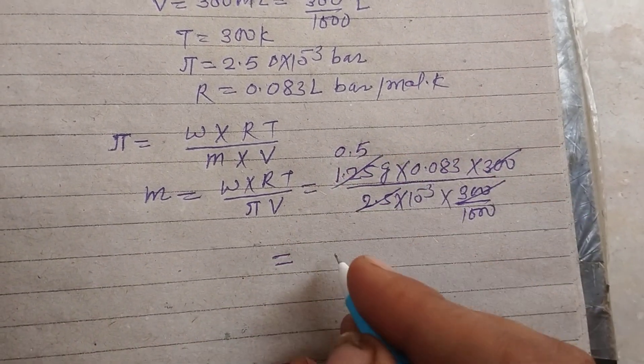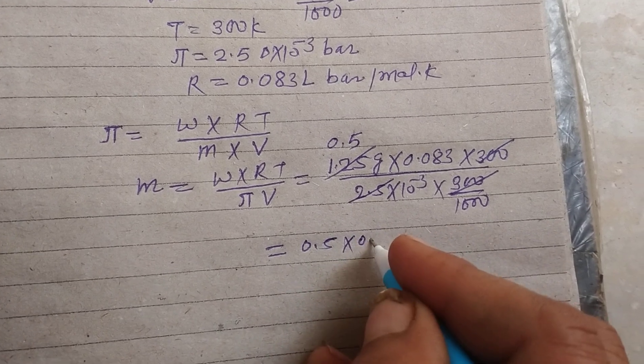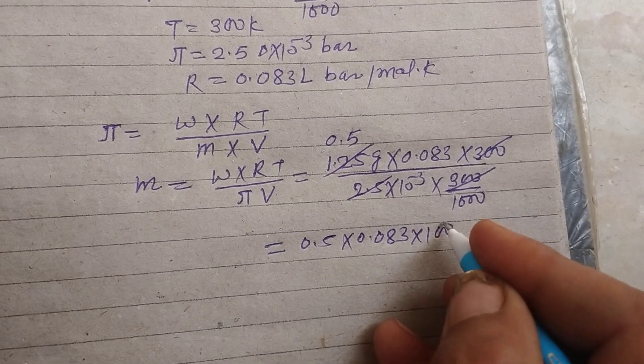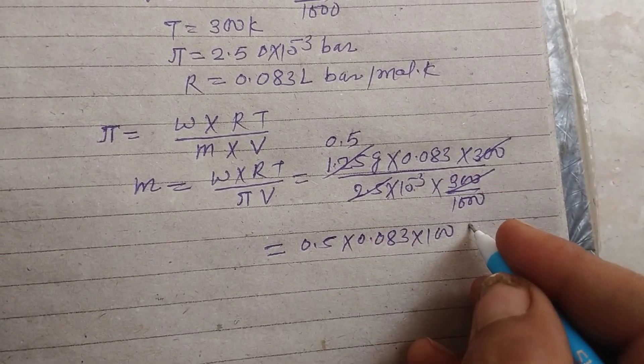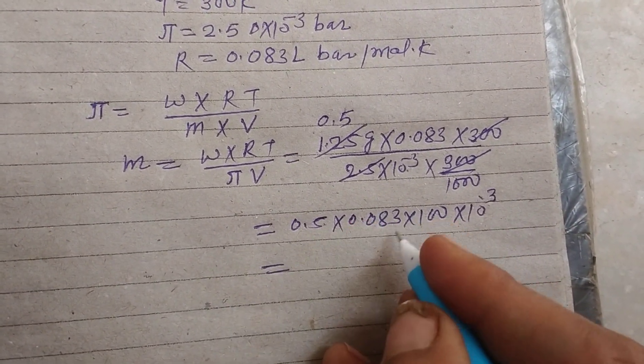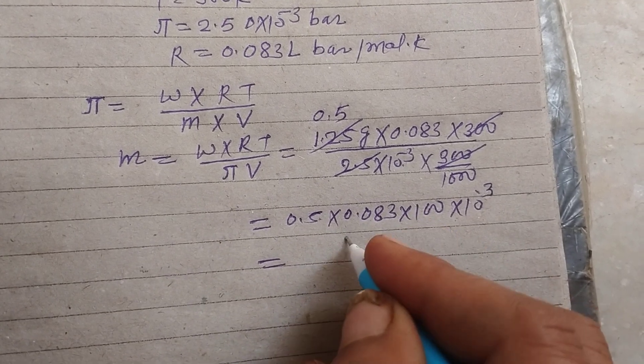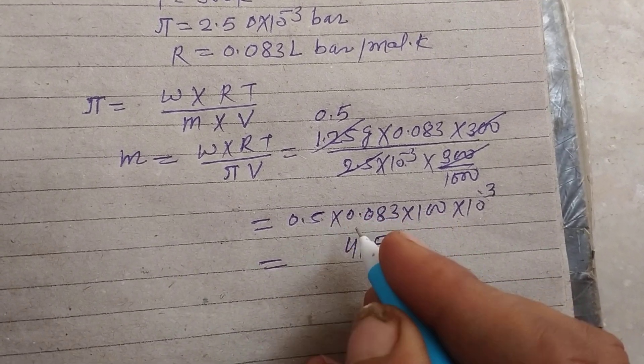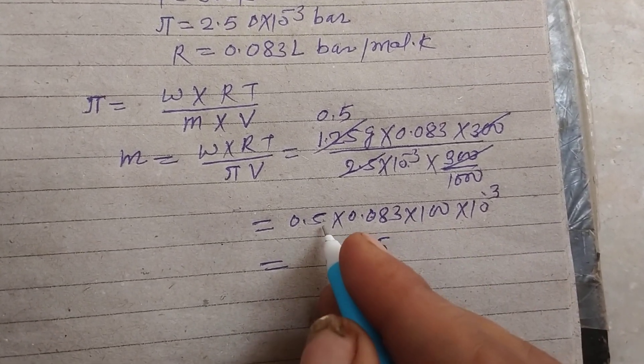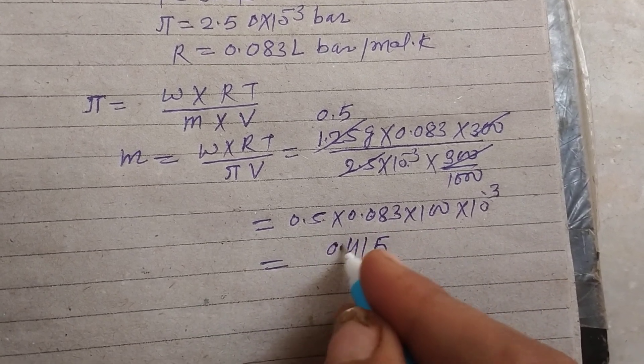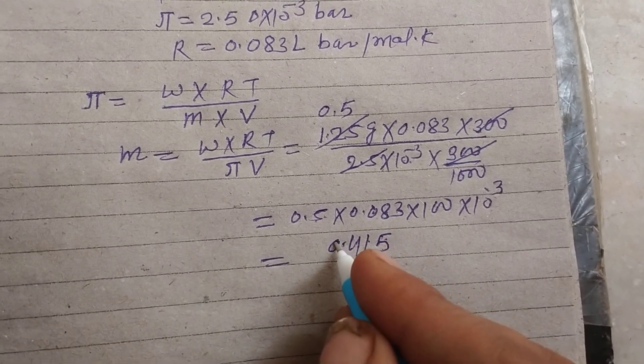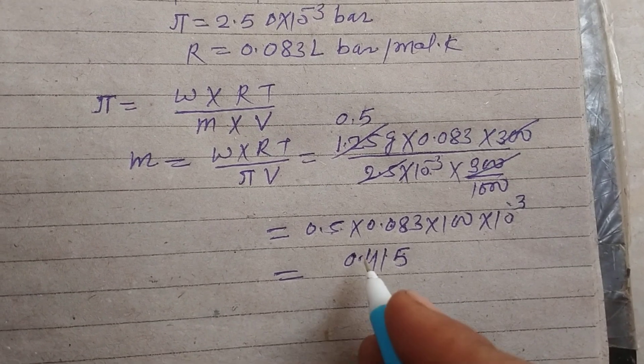We got 2.5 divided by 0.5, so 0.5 into 0.083 into 1000 upon this 10 to the power 3. The 10 to the power minus 3 becomes positive, therefore 0.415.